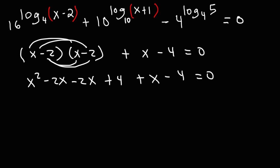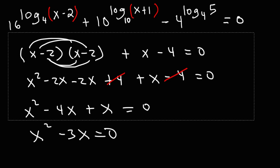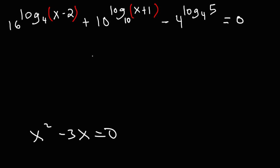So now we could cancel 4 and negative 4. Negative 2x minus 2x is negative 4x. And negative 4x plus x, that's negative 3x. Now our next step is to factor out the GCF, which is x. And so we're going to have x times x minus 3.